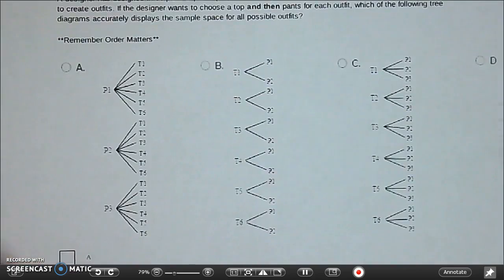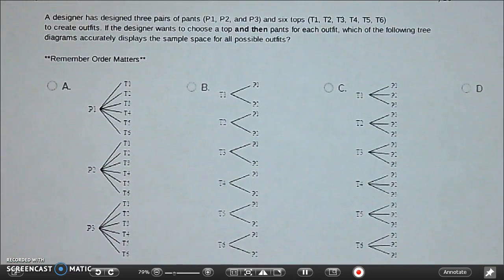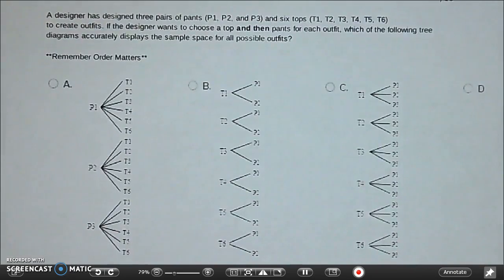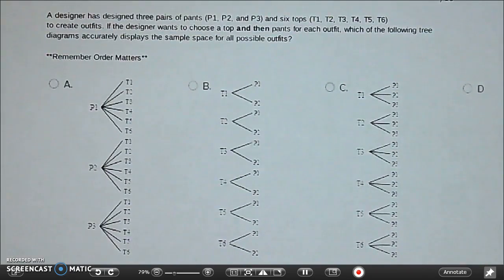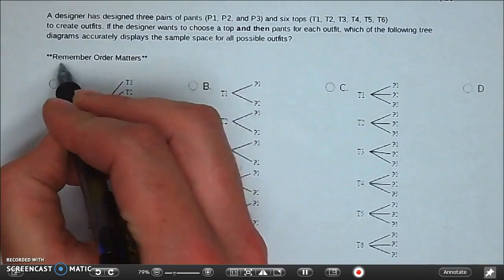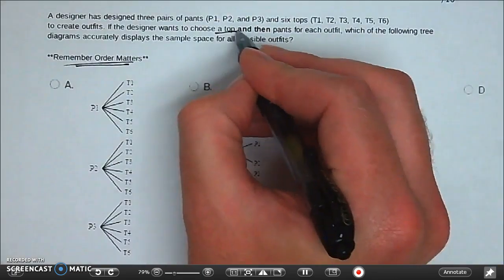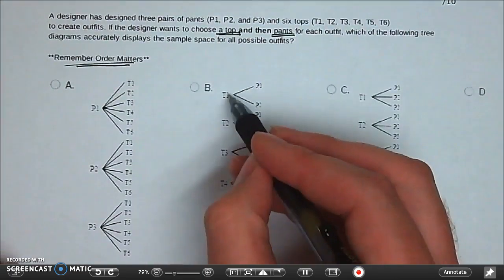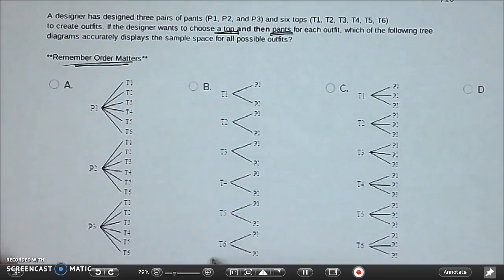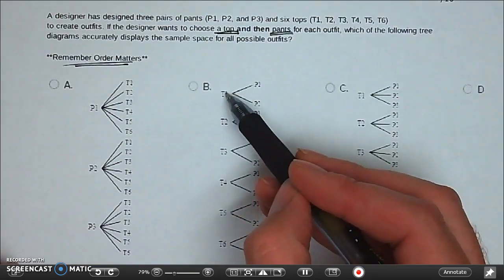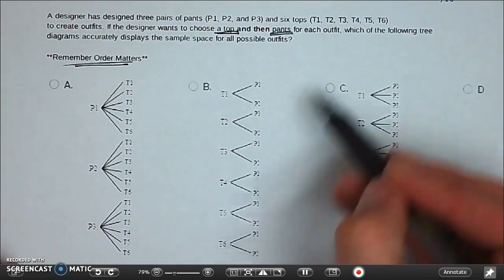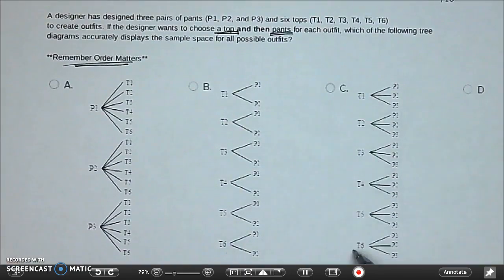All right, be real careful. Last question here. A lot going on. A designer has designed three pairs of pants and six tops to create outfits. If the designer wants to choose a top and then pants for each outfit, which of the following tree diagrams accurately displays the sample space for all the possible outfits? This is really important where the order absolutely matters. So what are they choosing first, pants or tops? Choose a top first and then pants. So we're looking for T to be in the first column. The question is, does she have six different tops? Yes, she does. Does she have six different tops? Yes, she does.